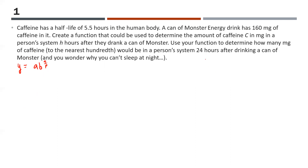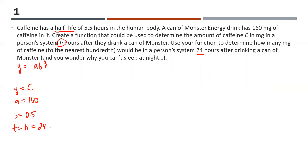In this case, Y equals C — the amount of caffeine in your body. A is your starting amount, which is 160. B is what you're multiplying by each time; this is a half-life question, so B is 0.5. T is H for hours, and in the second part of the question H is 24 hours — that's the elapsed time. P is 5.5, because that's how long it takes before you multiply by one half.